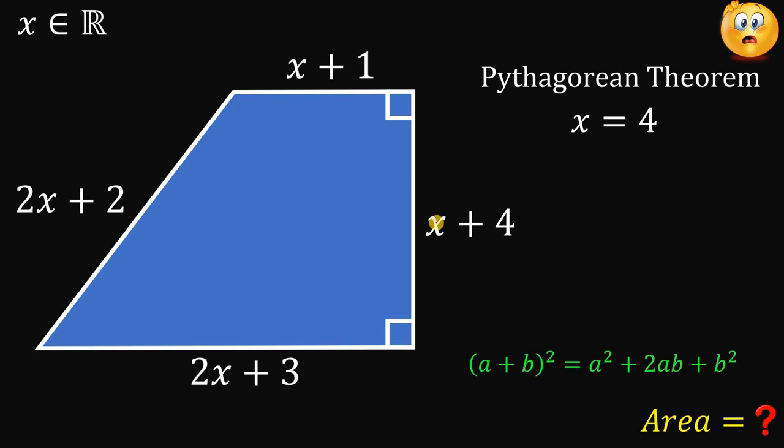We have a trapezoid. We decide x plus 1, x plus 4, 2x plus 3, and 2x plus 2. We know the value, the numerical value of x which is equal to 4. So, we can replace all of these x with its value 4.